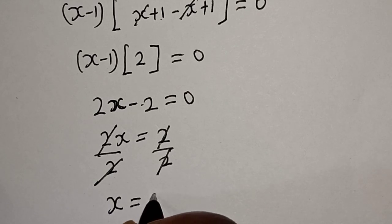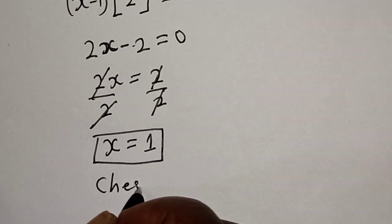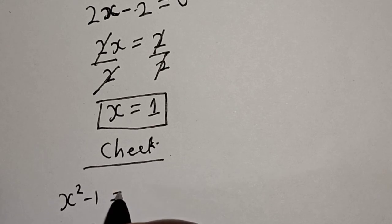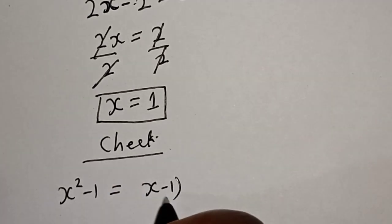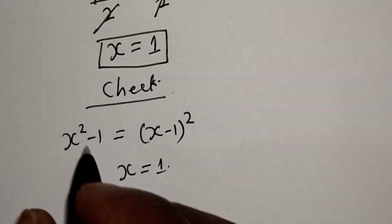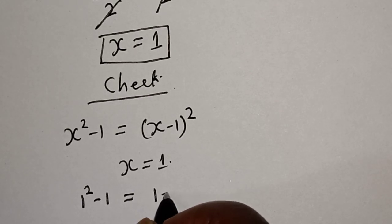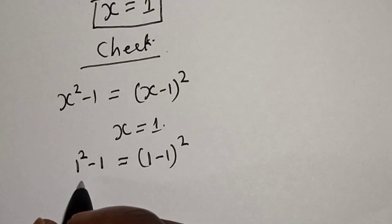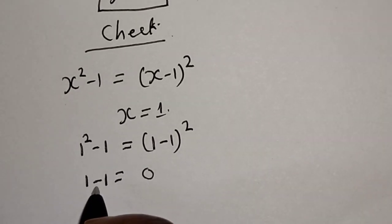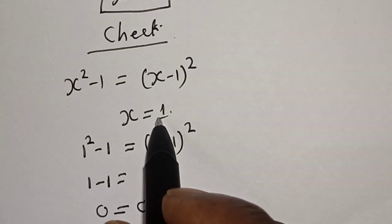We can check to confirm if our answer is right. Let's check using the given equation: s squared minus 1 equals (s minus 1) squared. At s equals 1: 1 squared minus 1 must equal (1 minus 1) squared. That gives 0 equals 0. We satisfy the given equation at s equals 1.